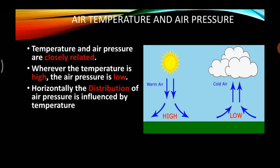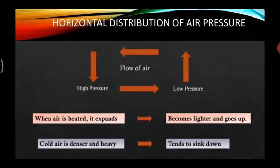Next is the relationship between air temperature and air pressure. Temperature and air pressure are closely related. Wherever the temperature is high, the air pressure is low. Horizontally, the distribution of air pressure is influenced by temperature. Temperature plays an important role. The flow of air is from high pressure to low pressure, as shown in the diagram — the arrows go from high pressure towards low pressure.